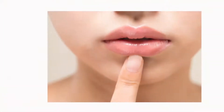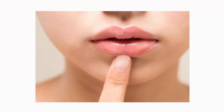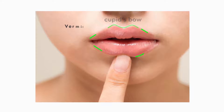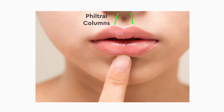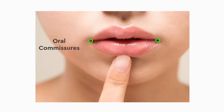Hi friends, today I'm going to talk to you about lips, which is a very interesting topic. A beautiful lip should have good volume in its body, a well-defined cupid's bow, a well-defined vermilion border, a well-defined philtral column, and the angle of the lip should be in the right place.